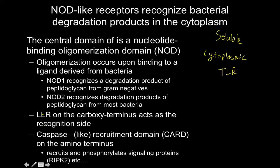NOD-like receptors have three structural features that are nice to know. They have the nucleotide binding oligomerization domain, otherwise known as the NOD — this is what they're named after. This oligomerization occurs once we have binding of a ligand derived from the bacteria. That ligand binding generally takes place at a leucine-rich repeat on the carboxy-terminus, just like with toll-like receptors.